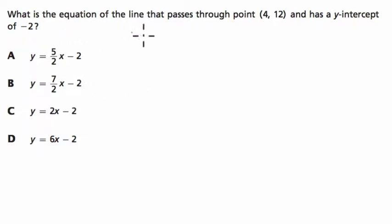All right, let's read the question. What is the equation of the line that passes through the point (4, 12) and has a y-intercept of -2?